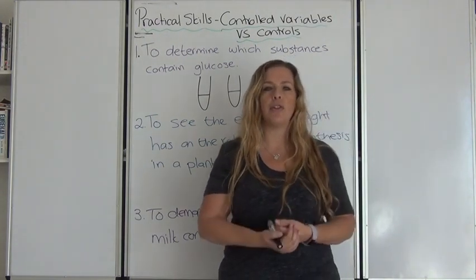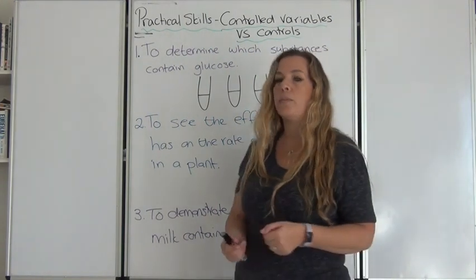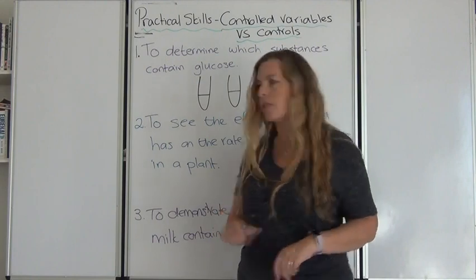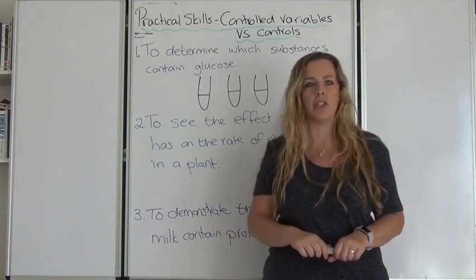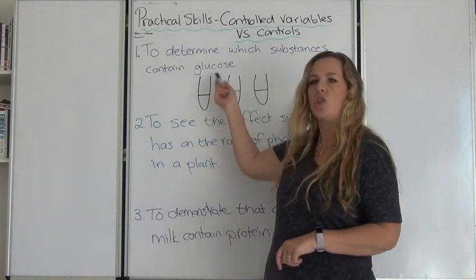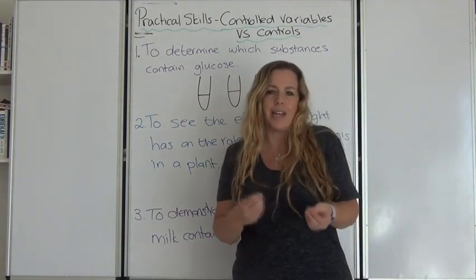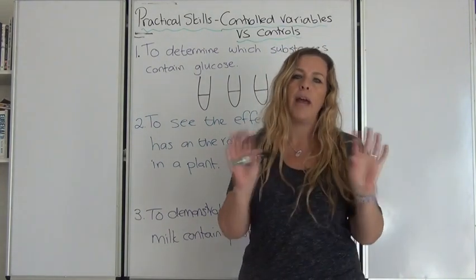Another controlled or fixed variable would be the amount of Benedict's. Let's say we're doing the glucose test with Benedict's. We're going to add 5 ml of Benedict's to each. You can't add 1, 2 and 7 because you will definitely get a different color change in each of them. So that would have to be the same.